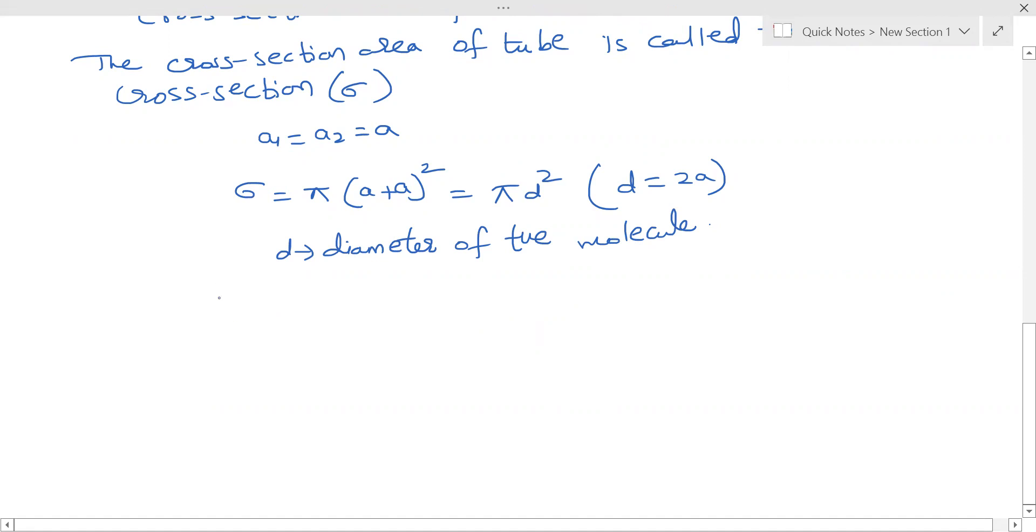Now as the temperature of the gas increases, the cross section area of the molecule σ will reduce. Because of this, the collisions will increase. The number of collisions is inversely proportional to the cross section area.